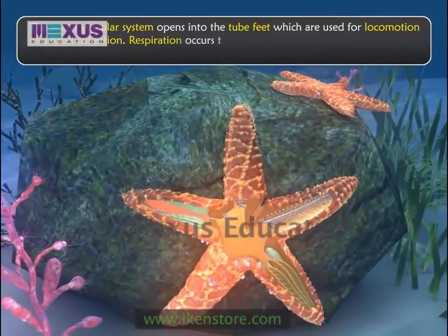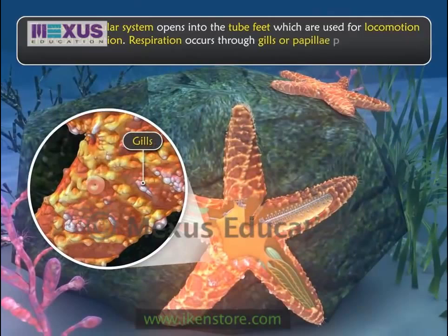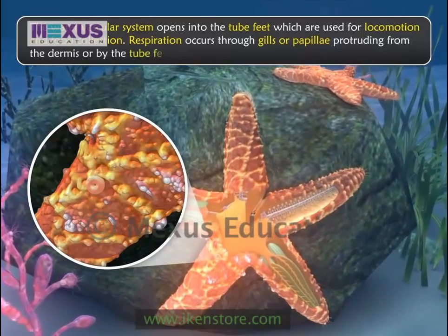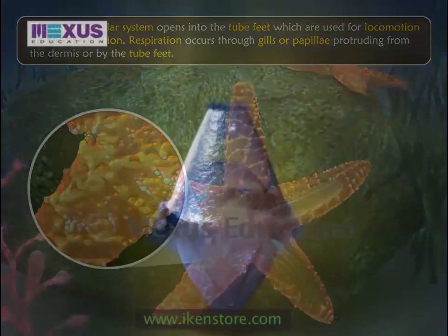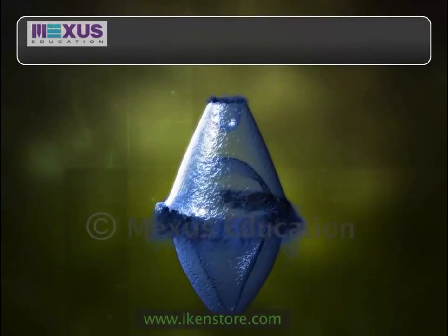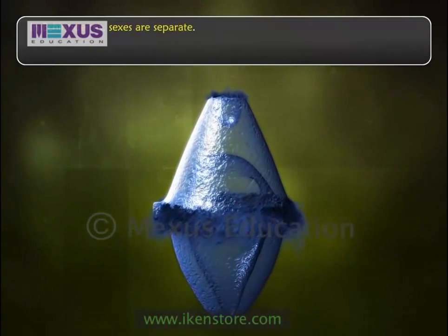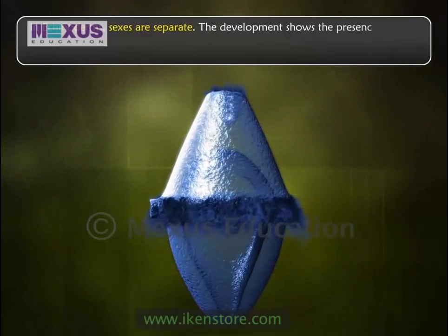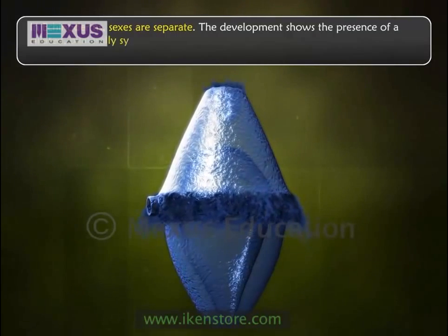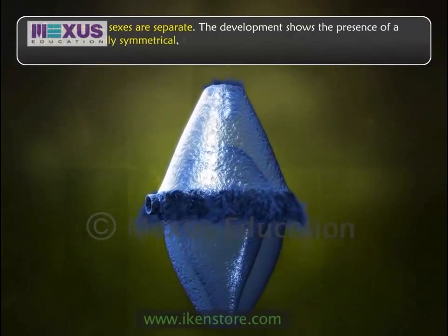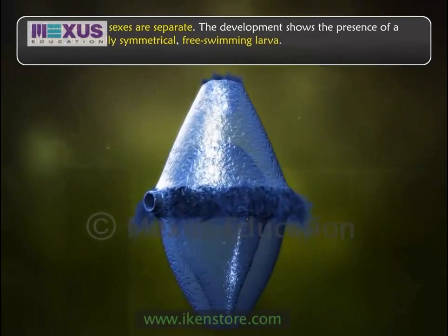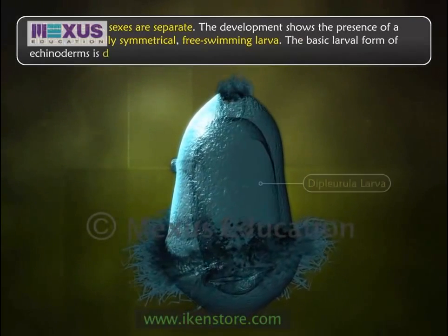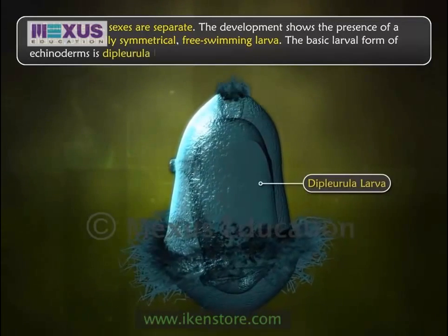Respiration occurs through gills or papillae protruding from the dermis, or by the tube feet. In Echinoderms, sexes are separate. The development shows the presence of a ciliated, bilaterally symmetrical, free-swimming larva. The basic larval form of Echinoderms is the Diplurula larva.